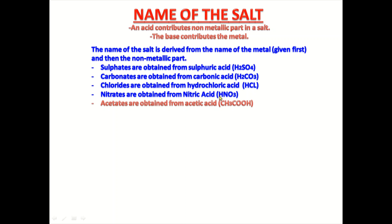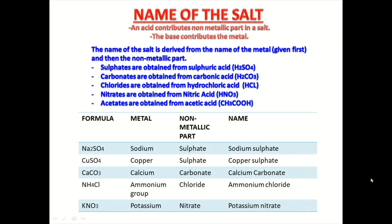These acids are giving their non-metallic part to salt. Let us see this table — here you can see the names of salts and their chemical formulas. Here, sodium sulfate is Na2SO4. Sodium is the metal name given first, which is contributed by the base. And the non-metallic part, which is sulfate, is given by H2SO4 — that is the non-metallic part.